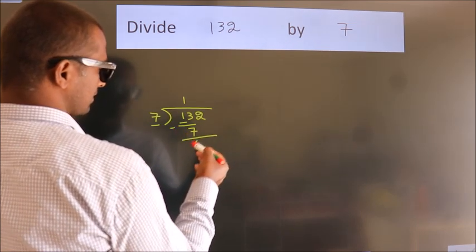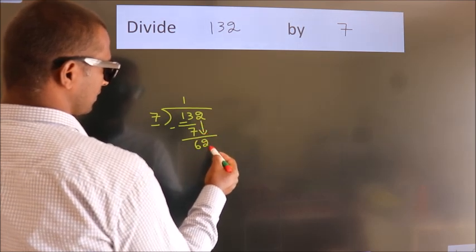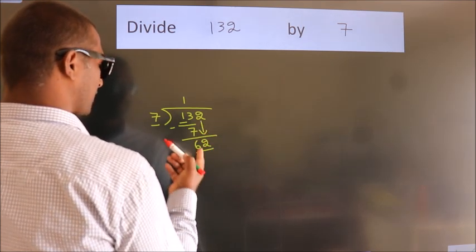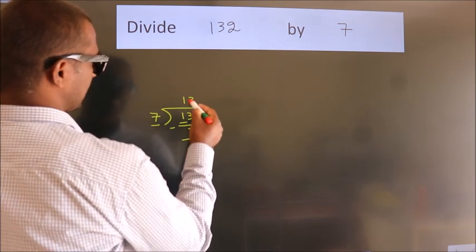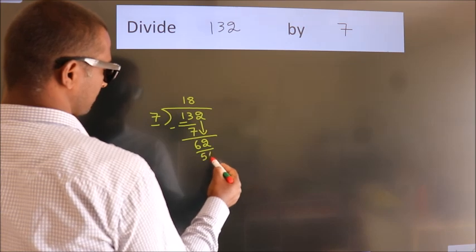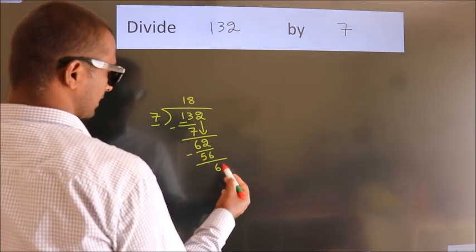After this, bring down the beside number, so 2 down. So 62. A number close to 62 in the 7 table is 7 times 8 equals 56. Now we subtract. We get 6.